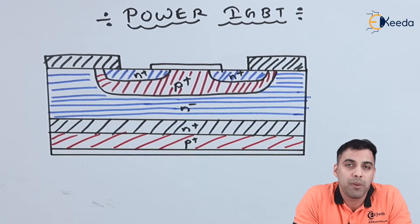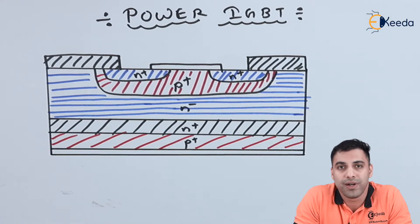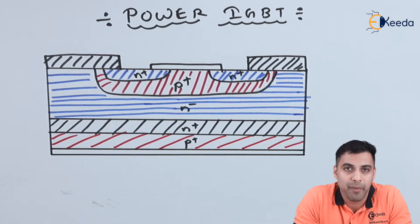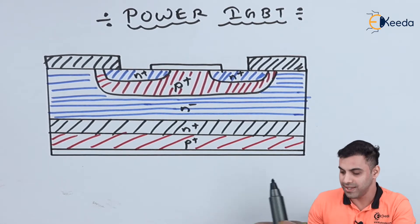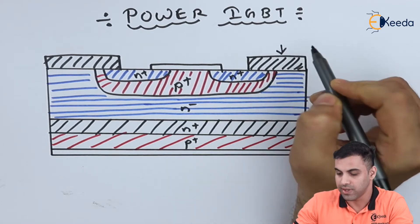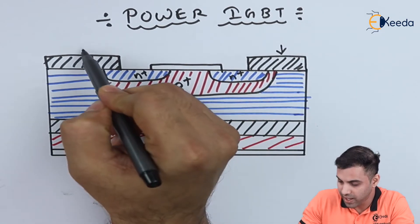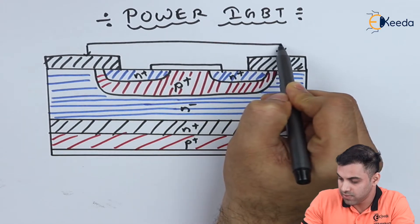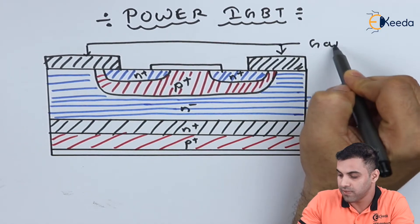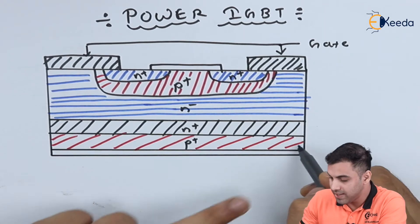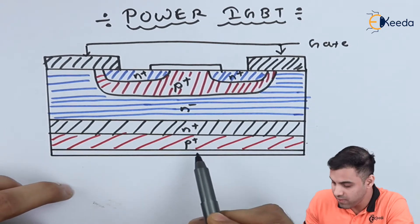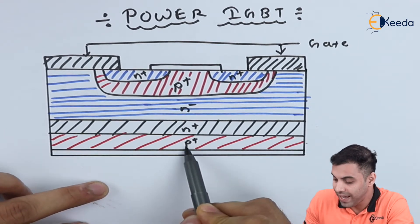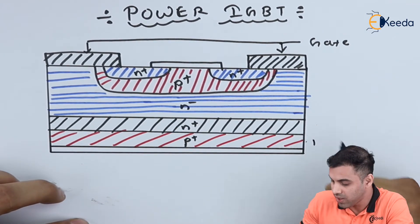Unlike a Power MOSFET which consists of a drain, source, and gate, the IGBT consists of an emitter, collector, and a gate. Here in this figure we can easily see the gate terminal. Now, this layer here is called the injecting layer, which consists of a P-plus region.